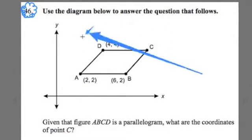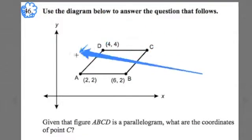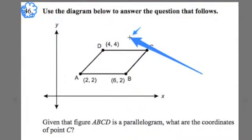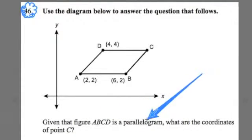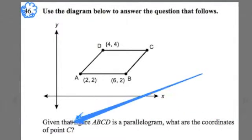Maybe you noticed that there was a shape here, a four-sided polygon. We call this a parallelogram. It says, given that figure ABCD is a parallelogram, what are the coordinates of point C?